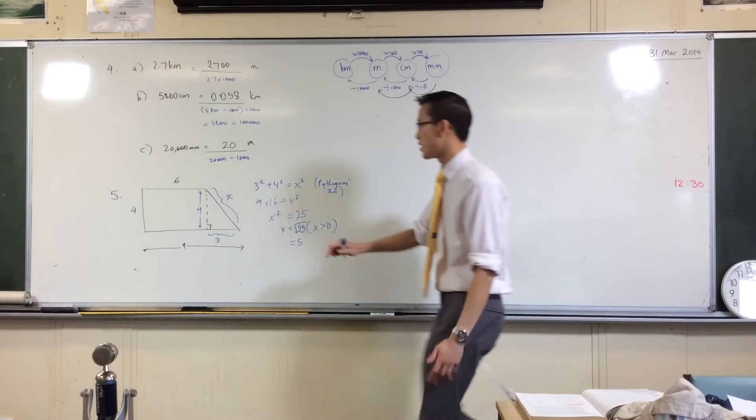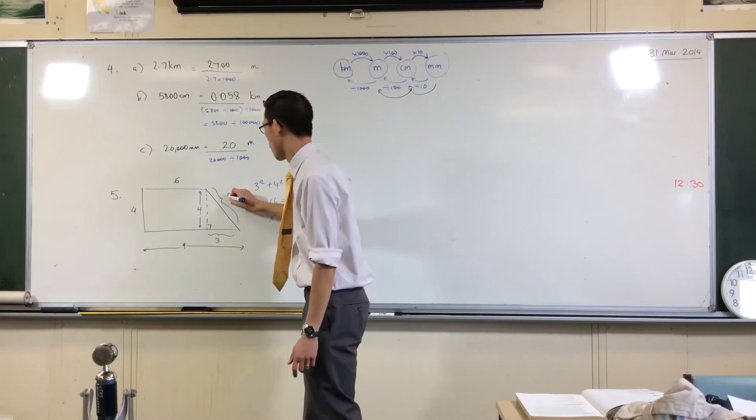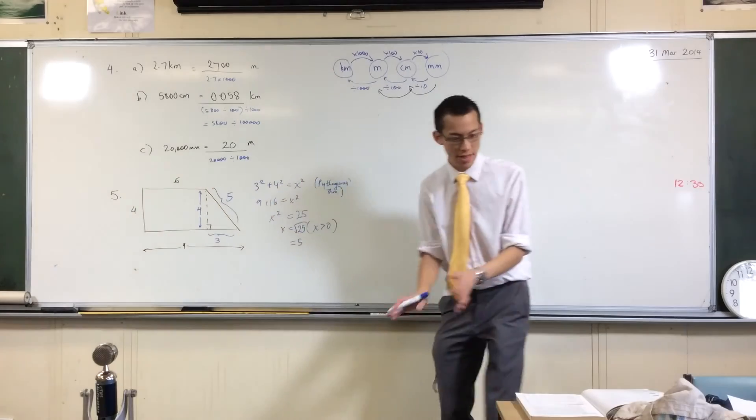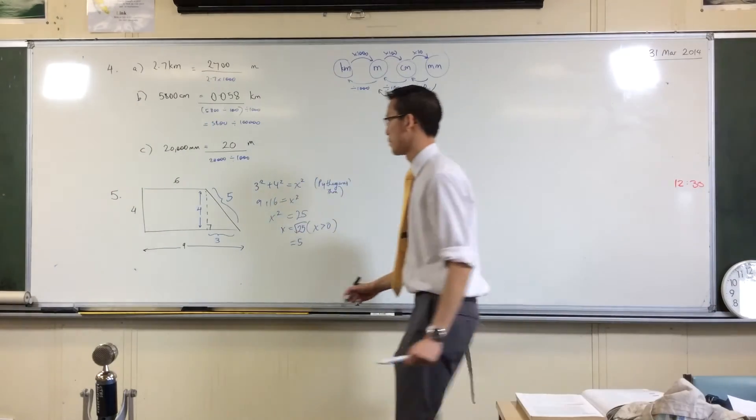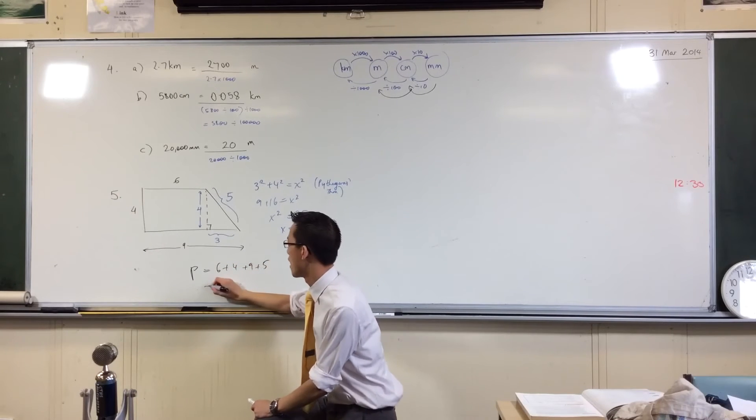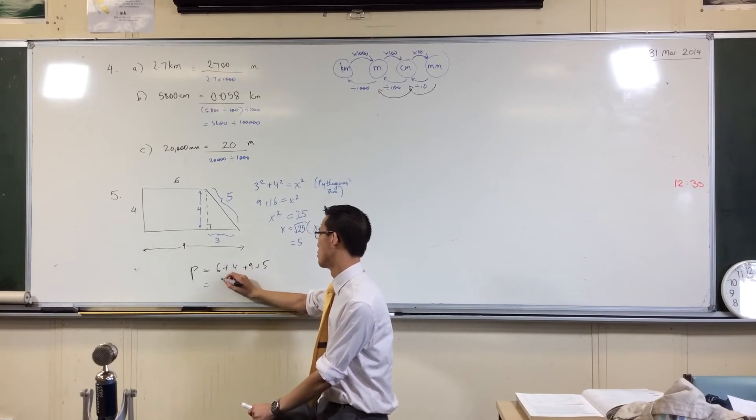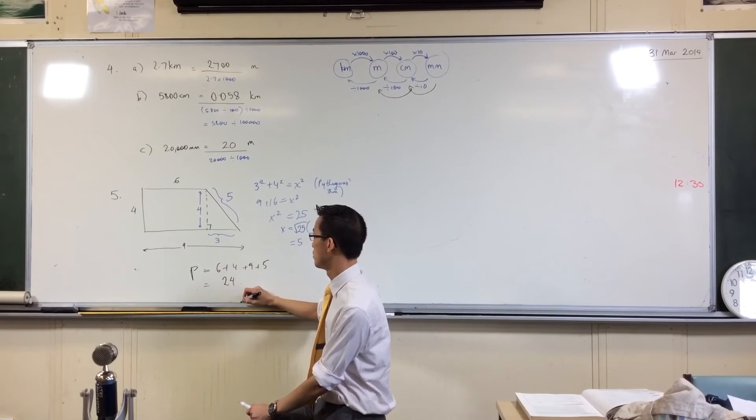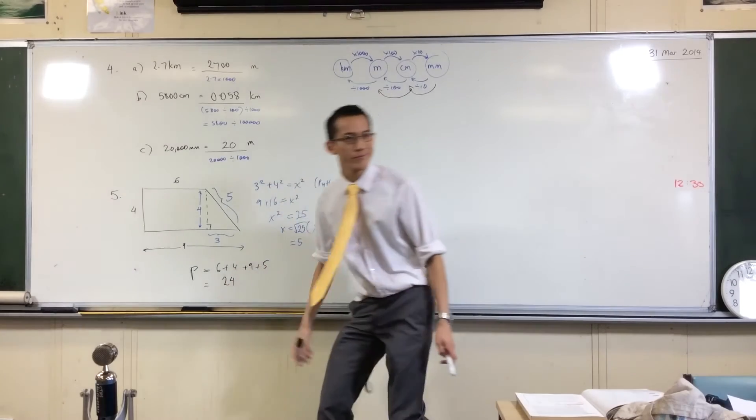So once you know that that is five, that was, I believe, the first mark to get that distance, and then you just add them up. You say the perimeter is six plus four plus nine plus five, which gave you 24, whatever units they were.